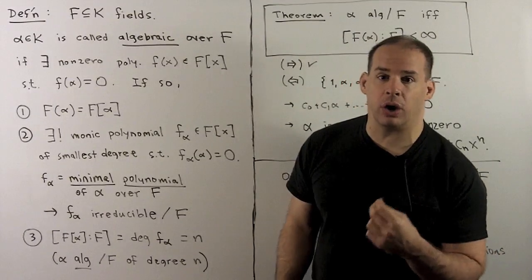For a special case, consider all elements algebraic over the rationals inside the complex numbers. We call this subfield the algebraic numbers. Now, the rationals themselves are inside here: any rational Q satisfies the non-zero polynomial X minus Q, so it is algebraic of degree one. As a field extension, Q adjoined Q over Q has degree equal to one.